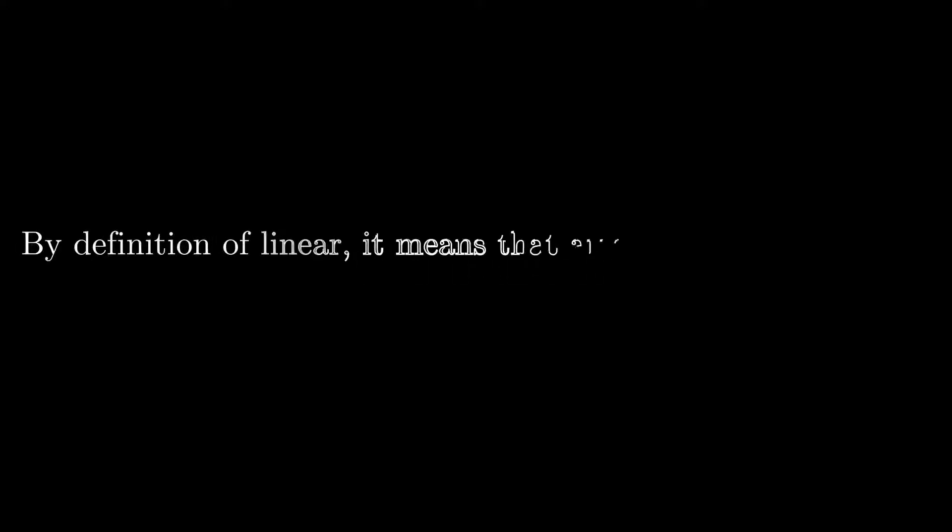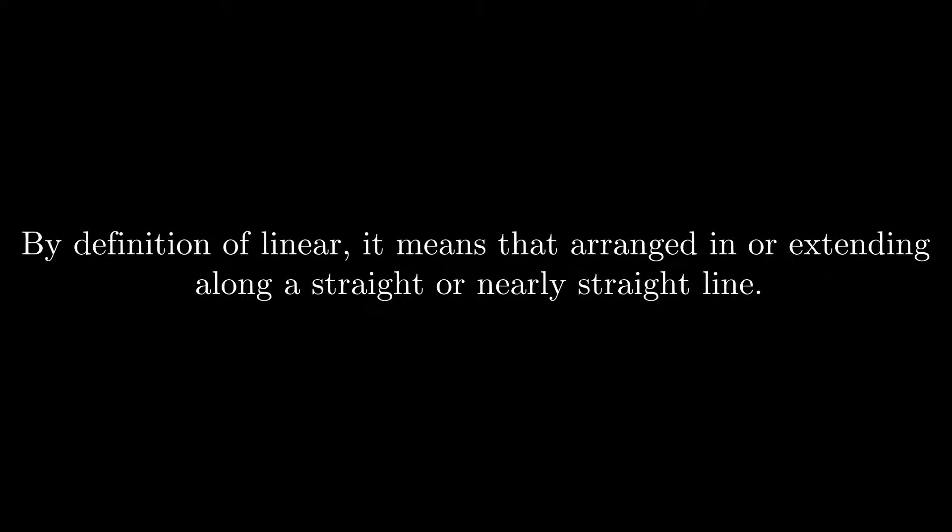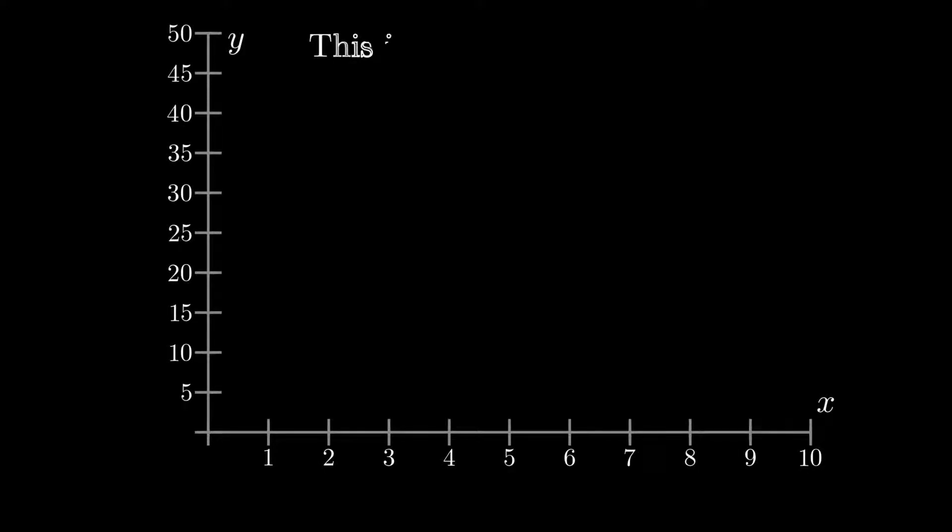First of all, what is linear and what is regression? By definition, linear means arranged in or extending along a straight or nearly straight line. In simple words, a straight line in a graph is termed as linear as it shows a linear relationship between the data.